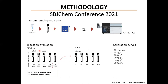To evaluate the digestion efficiency, nitric acid was added to a group of 5 samples, creating dilution factors of 1, 2, 3, 4, and 5 that were used to normalize, analyze signals, and evaluate matrix effects. The factor 5 was used to evaluate the time of digestion using another group of 5 serum samples and 5 different times. Calibration curves were constructed at concentrations presented here, prepared in 2% nitric acid.